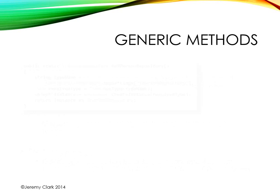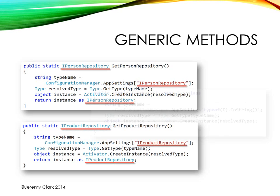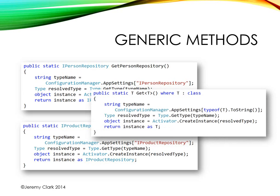Here's the main example we'll be looking at. We have two methods: getPersonRepository and getProductRepository. What we see is a lot of similarity between these two methods — in fact, there are only three locations where we can find differences, and those really have to do with the type we're dealing with. Wouldn't it be great if we could combine these into a single method that works for both cases? That's exactly what generic type parameters allow us to do — we just need to replace the specifics with our generic parameters.